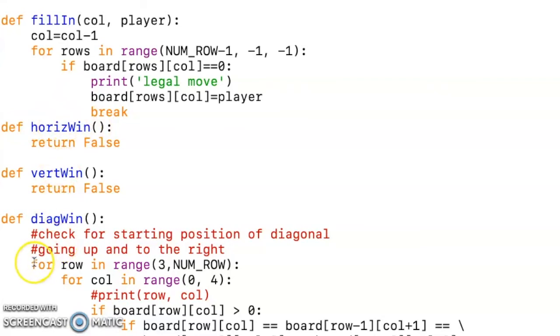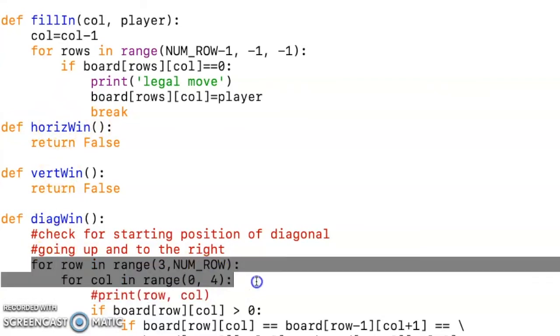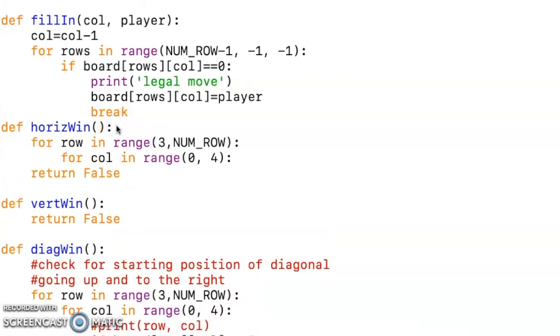The way to solve those is similar to what we've done with the diagonals that we've got the two for loops. So for the horizontal wind conditions, I said that my rows were going to go from zero to the number of rows and then my columns, I want to start at zero and I'm going to stop checking when I get to the number three. So with the for loop, we want to go one past that.